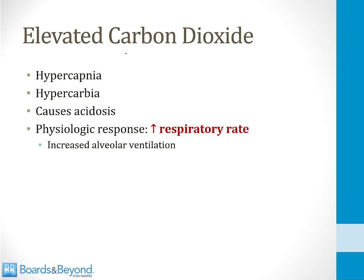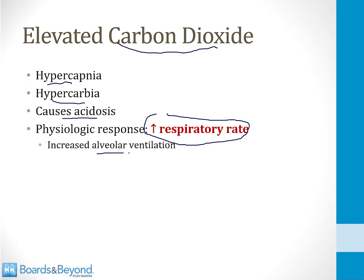Elevated carbon dioxide — hypercapnia or hypercarbia — leads to respiratory acidosis. The body doesn't like high CO2, so elevated CO2 is sensed by the brain, triggering an increase in respiratory rate to blow off CO2. In other words, alveolar ventilation increases in response to elevated CO2. Disease processes that could raise CO2 often don't because the body responds with a rise in respiratory rate.